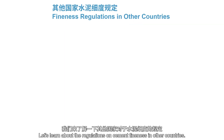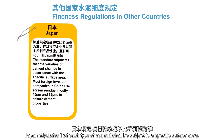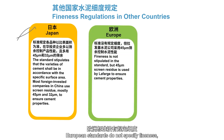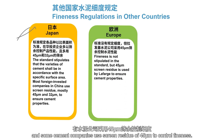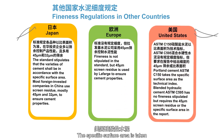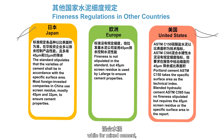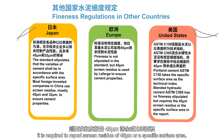Let's learn about the regulations on cement fineness in other countries. Japan stipulates that each type of cement shall be subject to a specific surface area, and enterprises in China mostly use screen residue of 45 micrometers and 32 micrometers. European standards do not specify fineness, and some cement companies use screen residue of 45 micrometers to control fineness. The specific surface area is taken as the fineness index of Portland cement in the United States, while for masonry cement, it is required to report screen residue of 45 micrometers or a specific surface area.